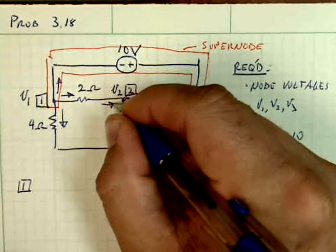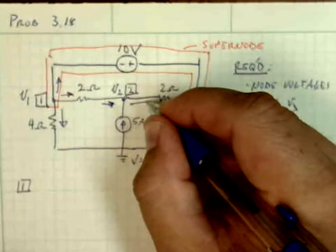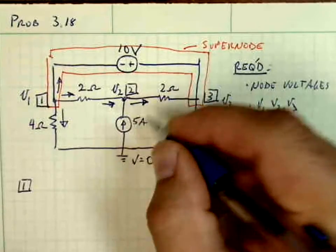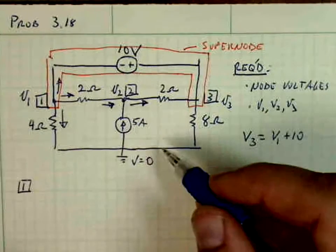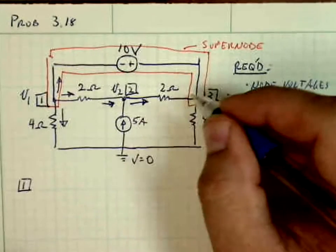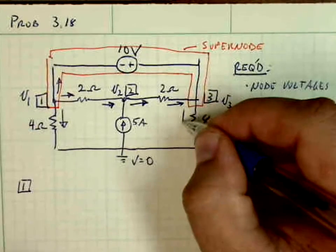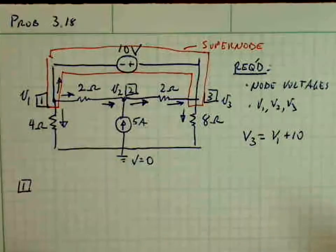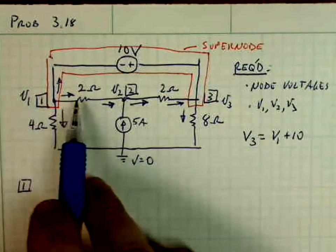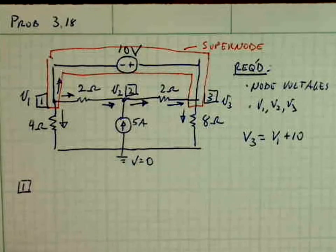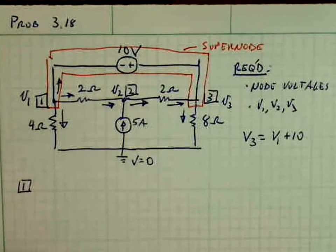At V2, I'll put the current moving to the right, and then there's that independent current source, 5 amps. And at V3, in case we need it, we'll have those. And of course, we have a supernode 1 to 3, so we're really going to do KCL at that supernode.